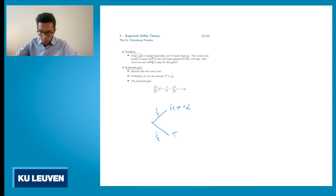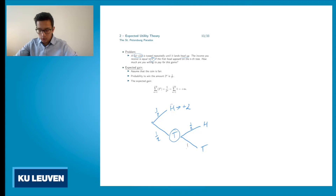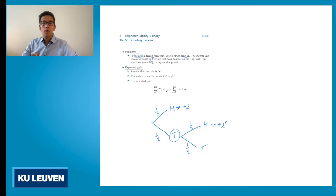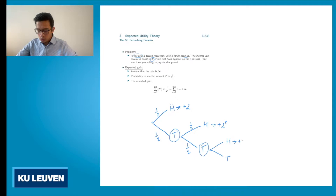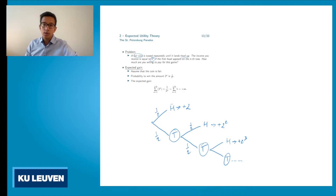If you toss tail, you can toss again. In this second toss you again have two possible outcomes, head or tail, with equal probability. If you toss head for the second time, your income is 2 to the power 2, because you had to toss twice to get head up first. If you toss tail you can toss again. If you get head in the third toss, your income is 2 to the power 3, and otherwise you can toss again. This is how the game continues until you get head up for the first time.